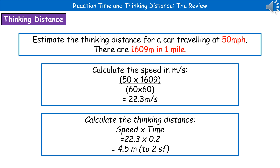To estimate the thinking distance, we use the equation: distance equals speed times time. The distance traveled is affected by the reaction time which, for an average human, is 0.2 seconds. So we do our speed — 22.3 meters per second — times our reaction time of 0.2 seconds, to give us 4.5 meters to two significant figures.